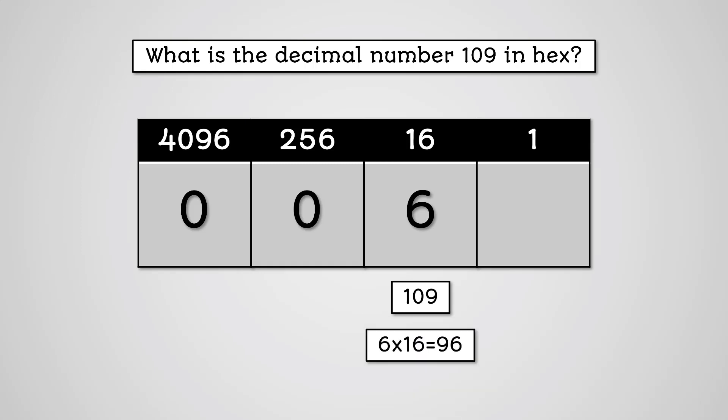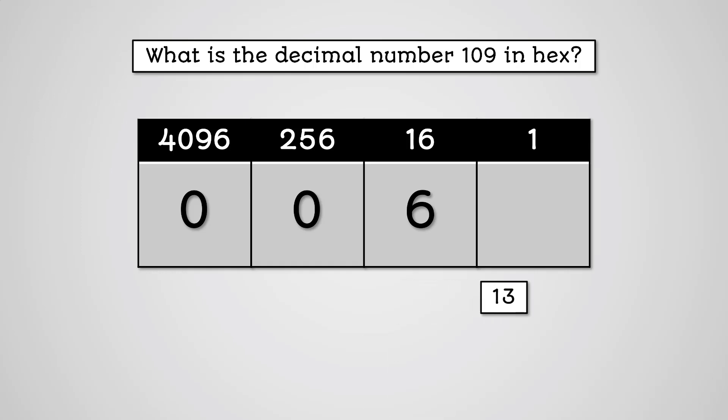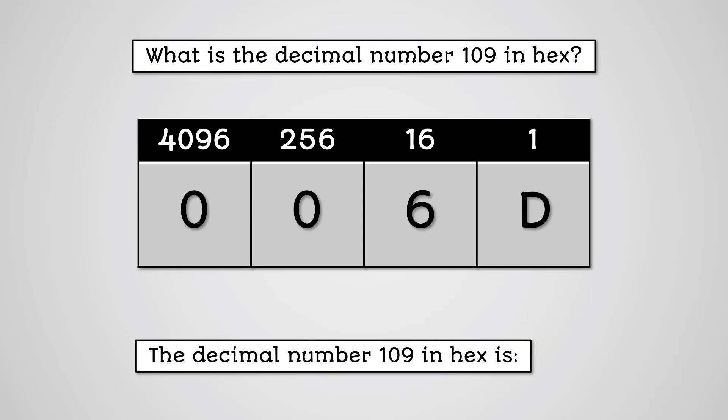6 times 16 is 96, so we have to take 96 away from 109. 109 minus 96 is 13. Will 1 fit into 13? Yes — how many times? 13. But what is the hex code for 13? Using the table we saw at the start of this lesson, we can see that it is D. So we put D into the 1 column. The hex value for 109 is 6D.